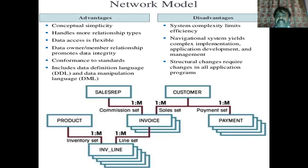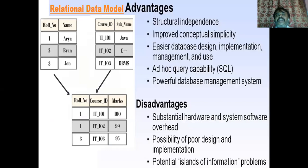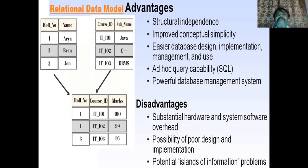Moving on to the relational model, which is always implemented in the form of a two-dimensional table. You can see from this diagram there are two tables — in the first, role number and name; in the second, course ID and subject name. When extracting data from these two tables into another table, that is an example of a many-to-one relationship where the role number and course ID from two different tables are taken into account along with the features of the new table. It provides structural independence, robustness, and real-life implementation capability. One-to-many, many-to-one, and many-to-many relationships can all be adapted.